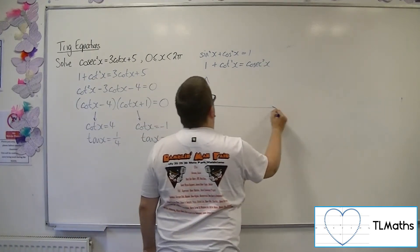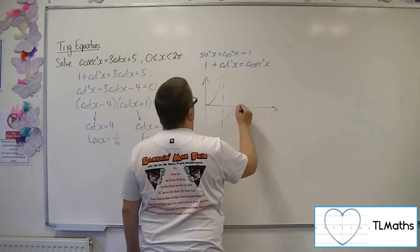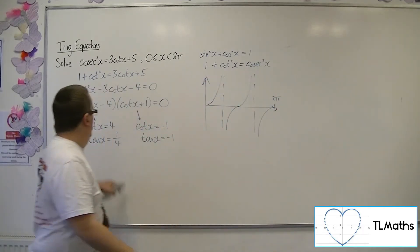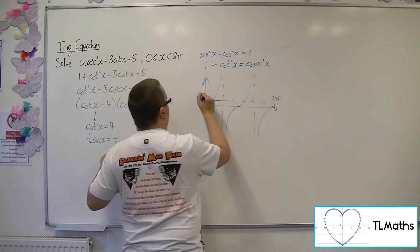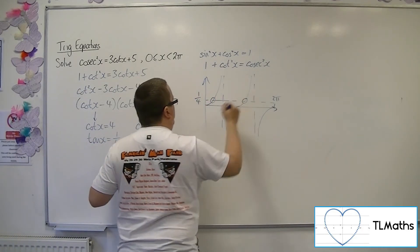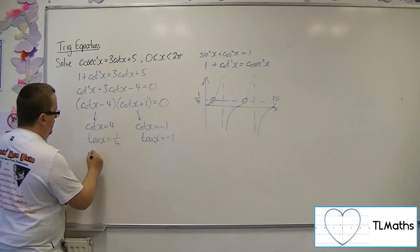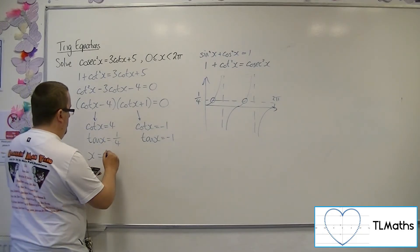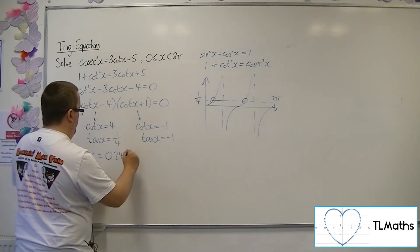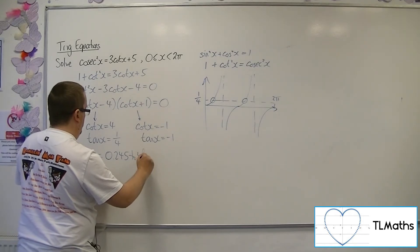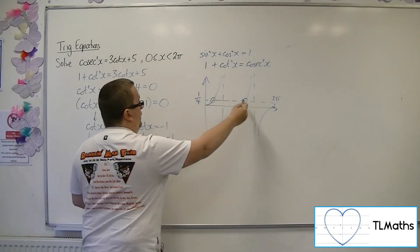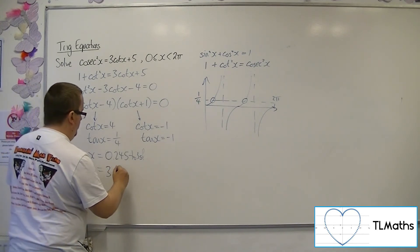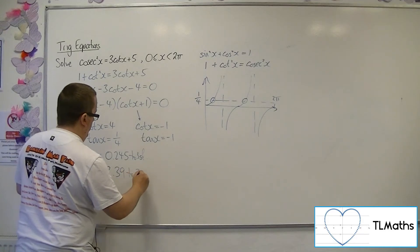So I'm going to sketch tan between 0 and 2 pi. Tan x equals a quarter. I'm looking for two solutions there and there. So inverse tan of a quarter is 0.245 to 3 sig fig. The second solution is found by adding on pi, which is 3.39 to 3 sig fig.